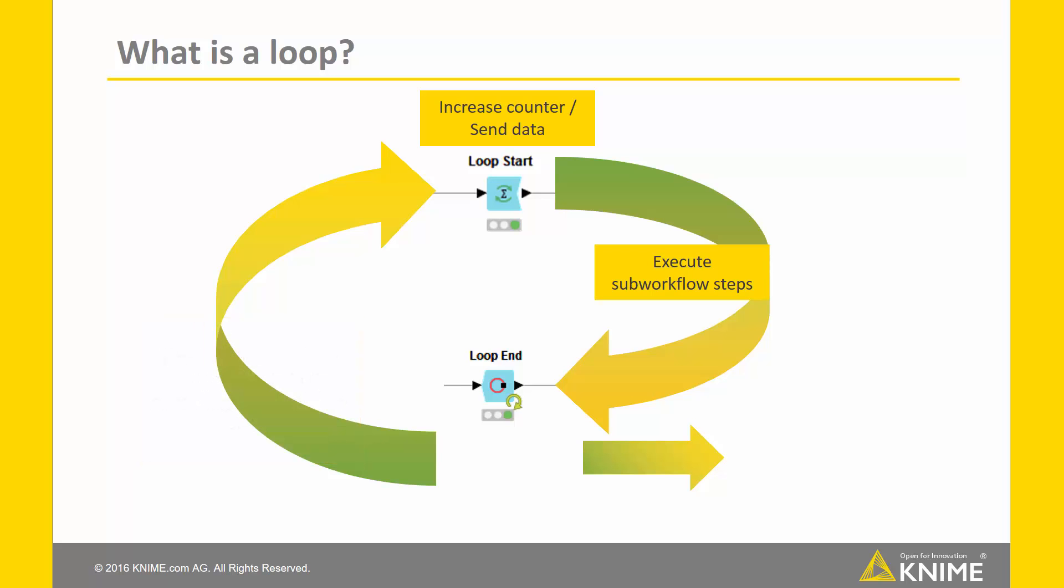The loop body is then responsible for executing sub-workflow steps. After those are executed, we are going to the loop end node and checking if our end condition is fulfilled. If this is not the case,